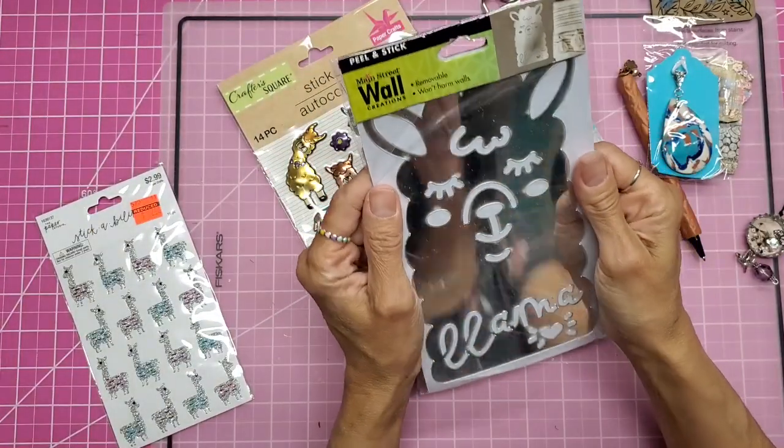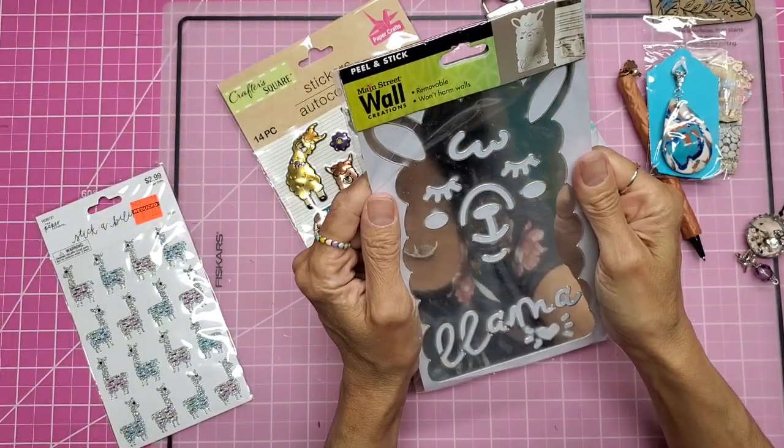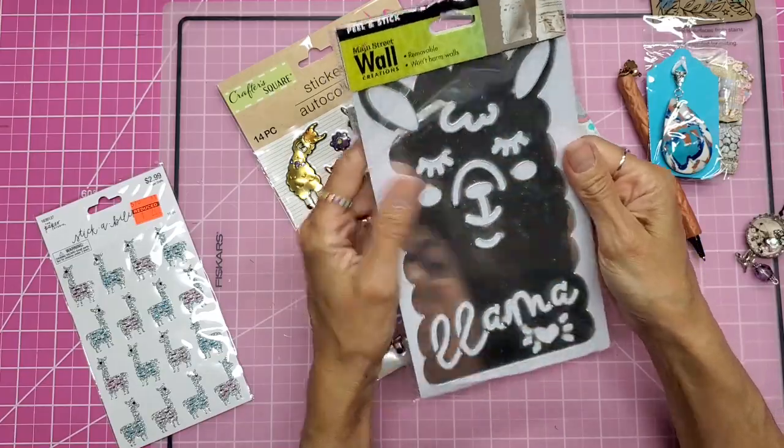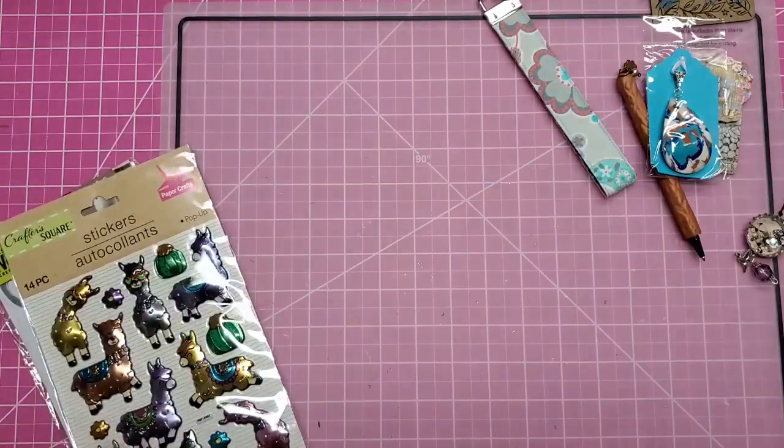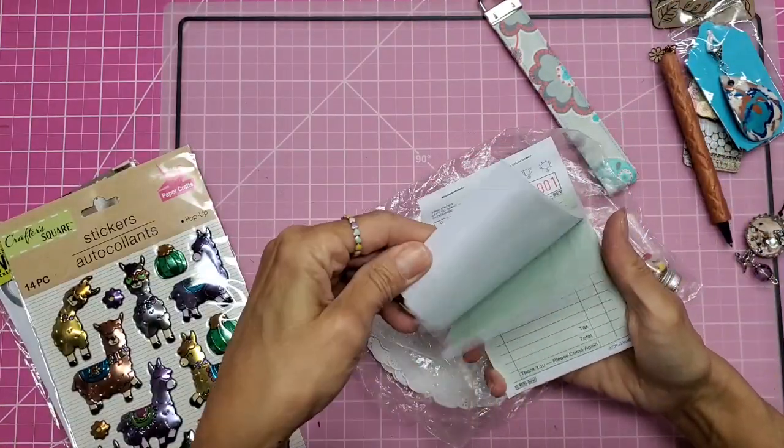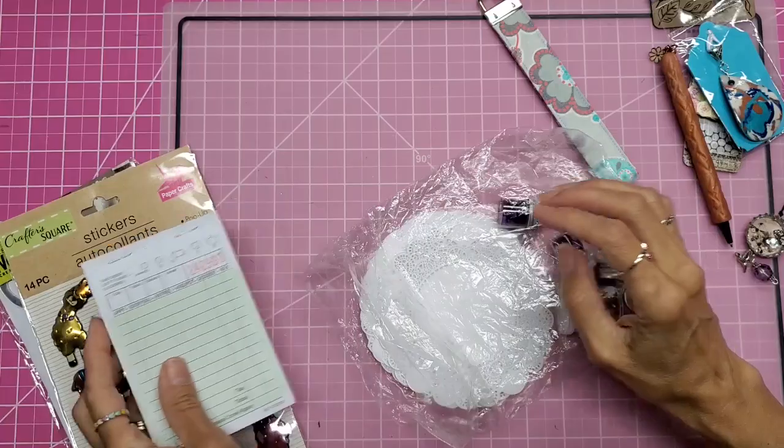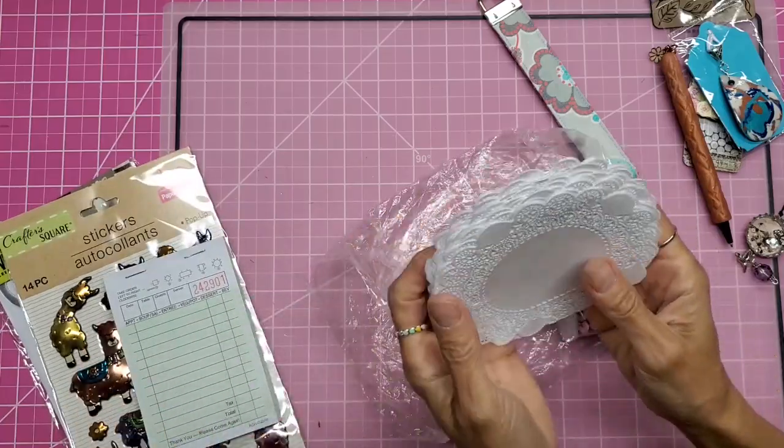It's a wall decoration, peel and stick wall decoration. That is funny. And look at these stickers. Oh, they're puffy, squishy. I love these. These are great in junk journals and more doilies. Perfect.